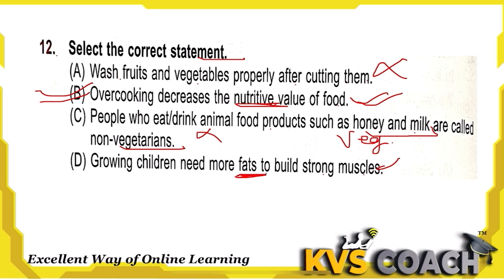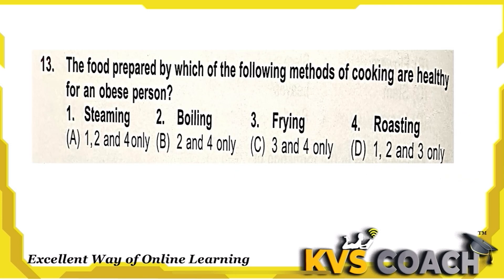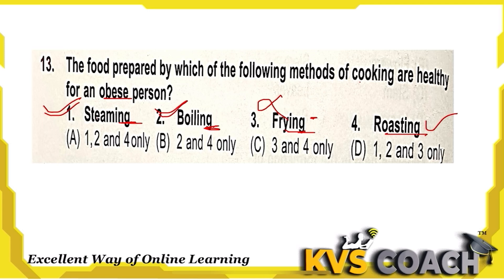Question 13: Which method of cooking is healthy for an obese person? Steaming — yes, steamed food is easy to digest. Boiling — yes, also easily digestible. Frying — no, food fried in oil or ghee is not easily digestible, so not suitable for an obese person. Roasting — yes, this can be digested easily as very little oil or ghee is used. So first, second, and fourth are suitable but not frying.